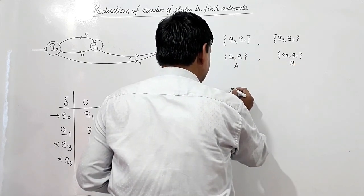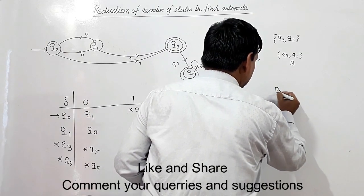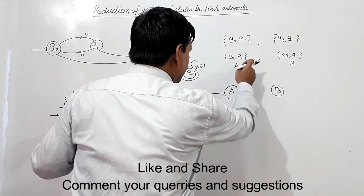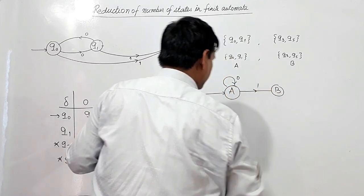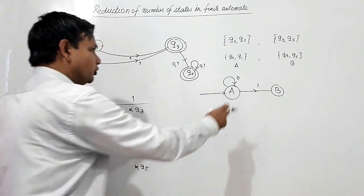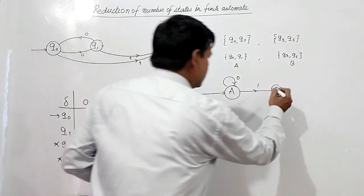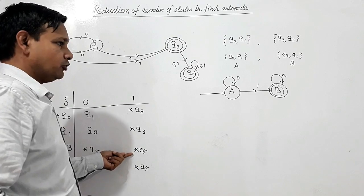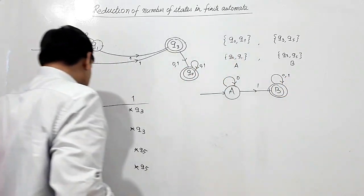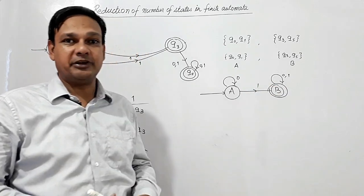We label {Q0, Q1} as state A (the initial state) and {Q3, Q5} as state B (the final state). Q0 on 0 goes to Q1, which is in A, and on 1 goes to Q3, which is in B. Q1 on 0 goes to Q0, which is in A, and on 1 goes to Q3 in B. Q3 on 0 goes to Q5 in B, and Q3 on 1 goes to Q5 in B. Q5 on 0 and on 1 both go to Q5, remaining in B. So the minimal DFA has two states: A and B.